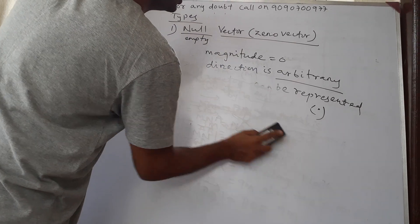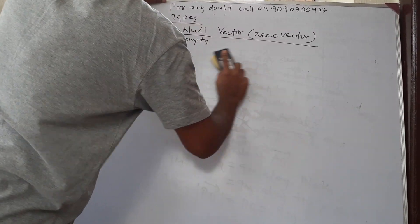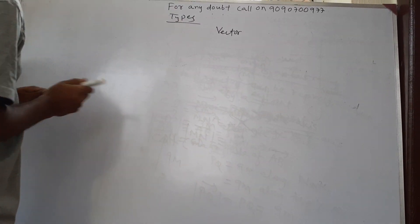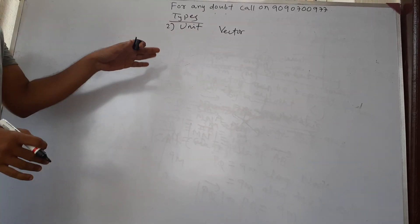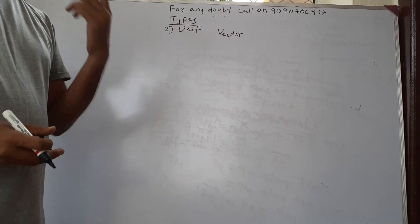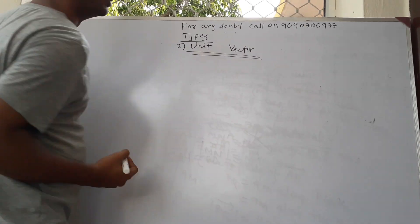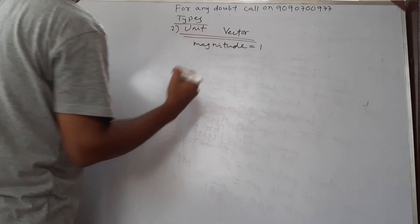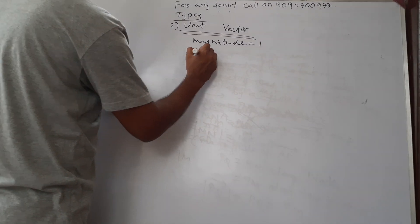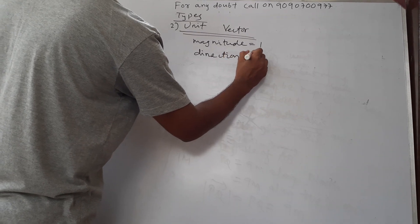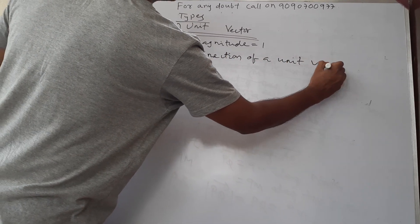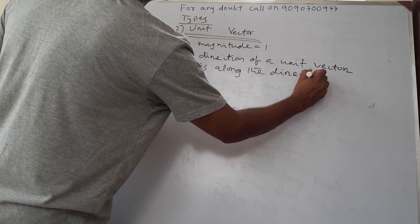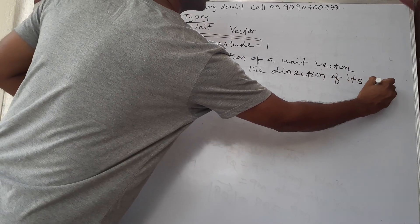The second type is the unit vector. This is really important — I already mentioned at the start of this class that to represent a vector, unit vectors are very useful. The magnitude of a unit vector is one, and the direction of a unit vector is along the direction of its own vector.